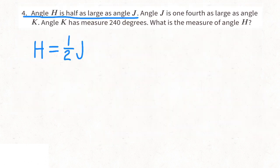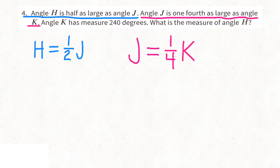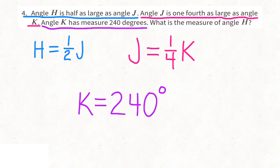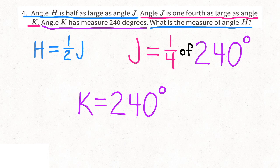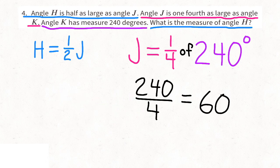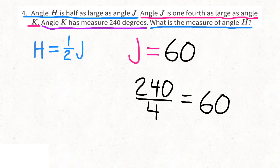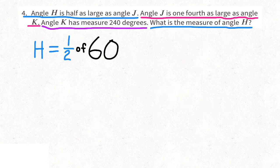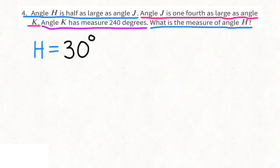Problem number 4: Angle H is half as large as angle J. Angle J is one-fourth as large as angle K. Angle K has a measure of 240 degrees. What is the measure of angle H? The information tells us that angle J is one-fourth of angle K, or one-fourth of 240 degrees. 240 divided by 4 is 60, so angle J is 60 degrees. It also tells us that angle H is half as large as angle J, so half of 60 degrees is 30 degrees. Angle H is 30 degrees.